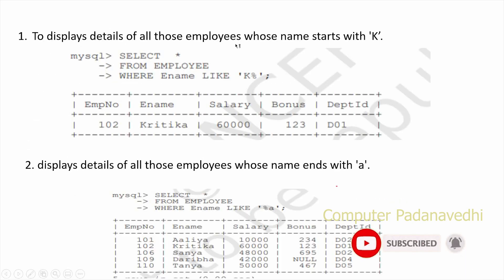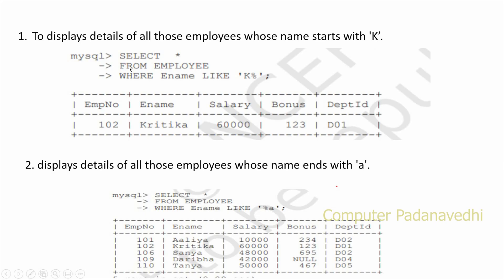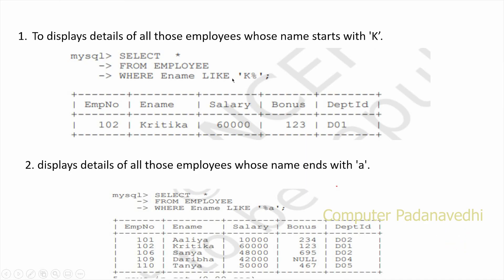To display details of all those employees whose name starts with K: SELECT * FROM Employee WHERE Ename LIKE 'K%'. K percentage means names starting with K.